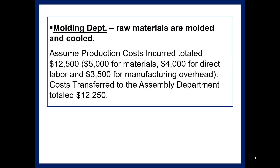In the molding department, raw materials are molded and cooled. Assume production costs incurred totaled $12,500: $5,000 for materials, $4,000 for direct labor, and $3,500 for manufacturing overhead. Costs transferred to the assembly department totaled $12,250.